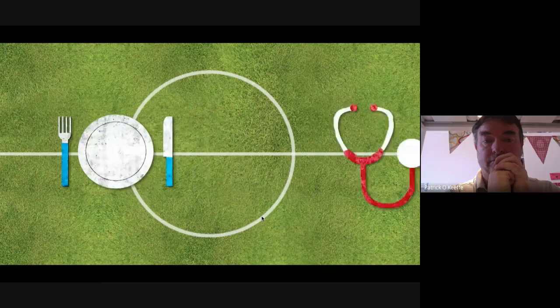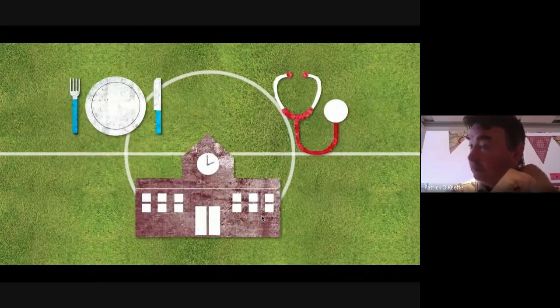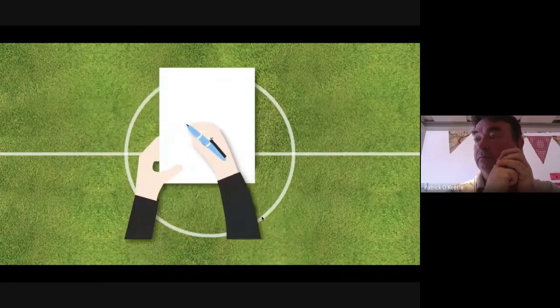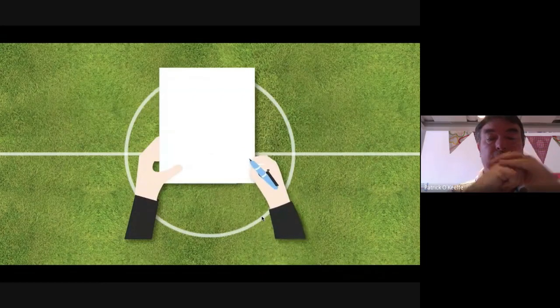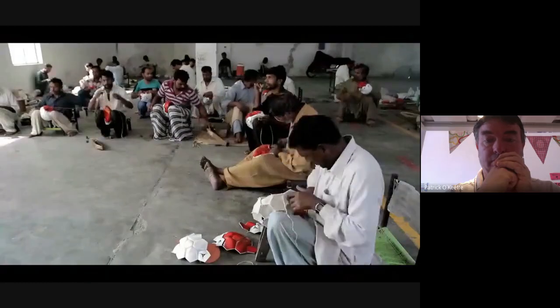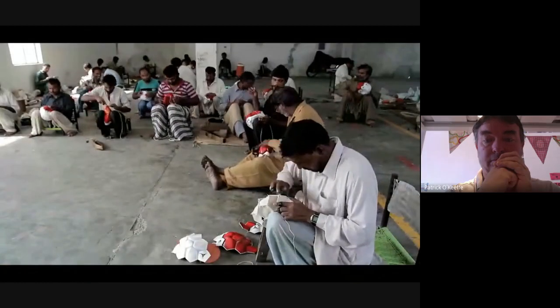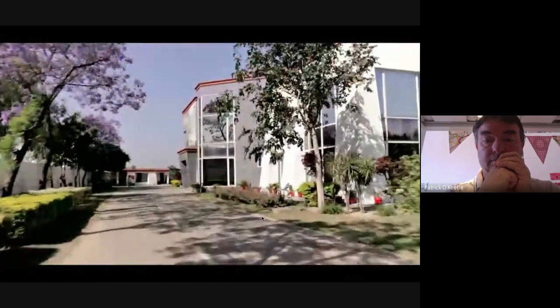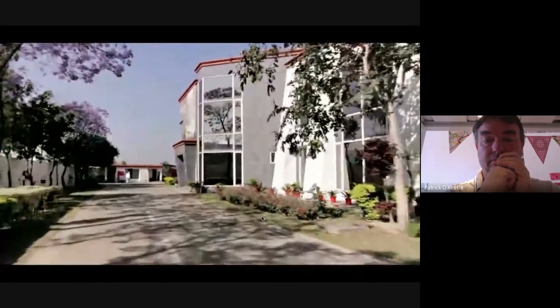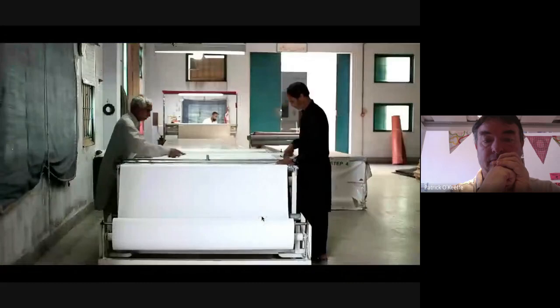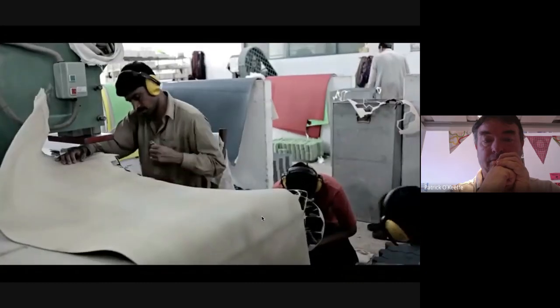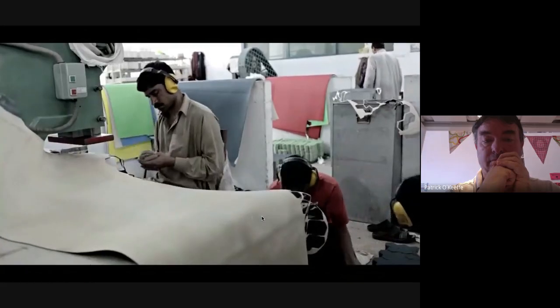Stitchers couldn't earn enough money to feed their families and some were forced to make their children work so they could afford basics like food and healthcare. This meant many children couldn't go to school. In 1997 an agreement was signed to stop high rates of child labor in football production in Pakistan. All stitching had to be done in factories or rural stitching centers. But in some cases, although children weren't working anymore, many families still couldn't afford to send them to school and were getting less money.